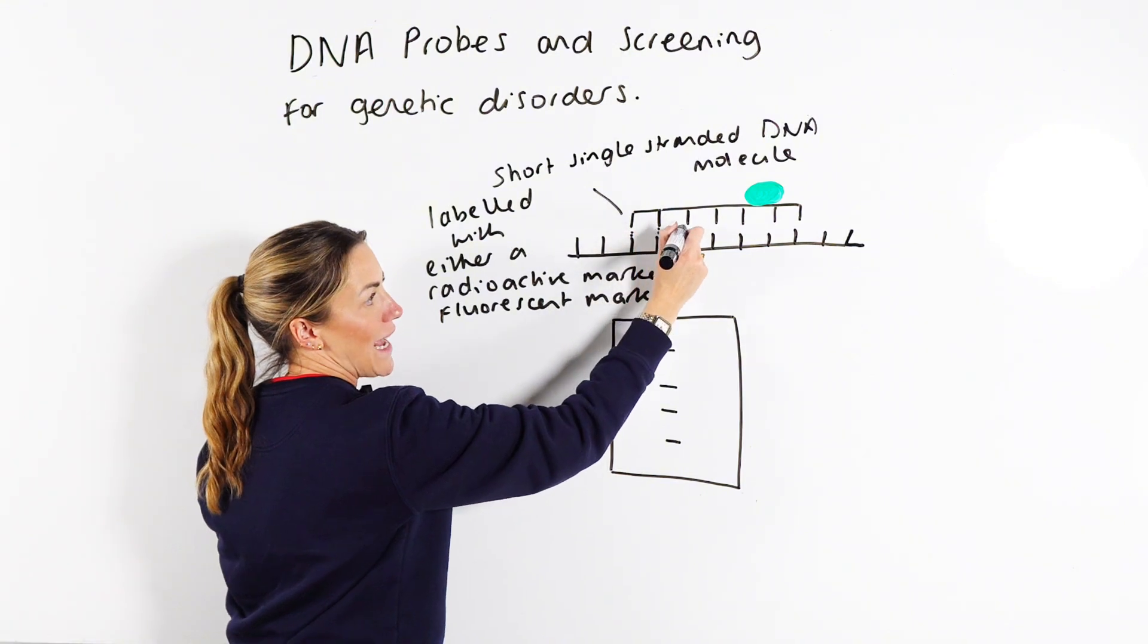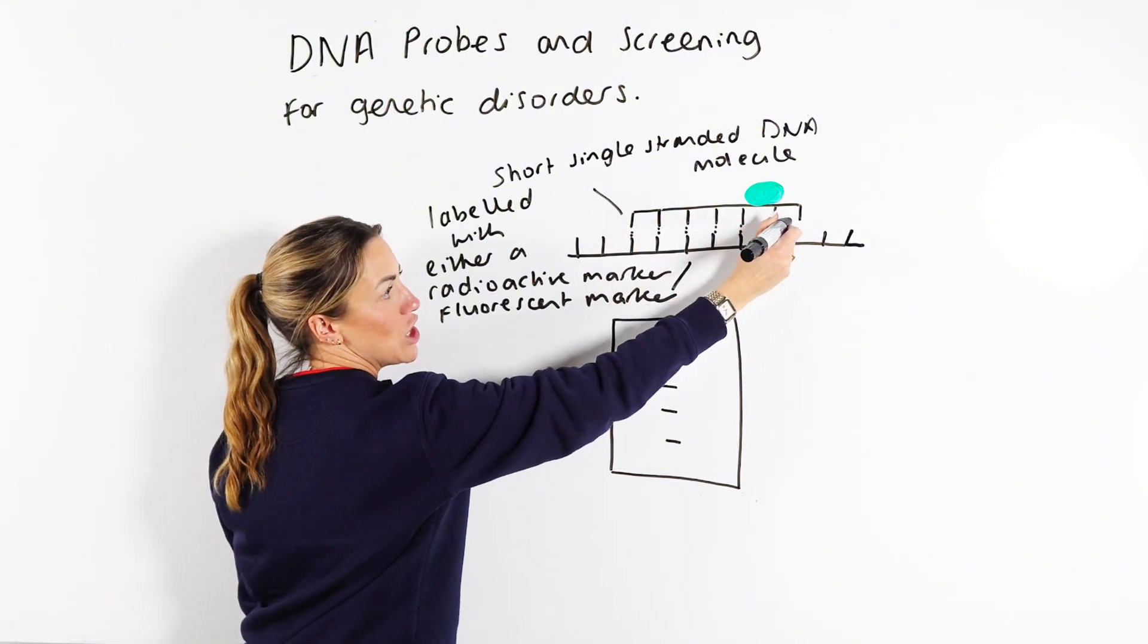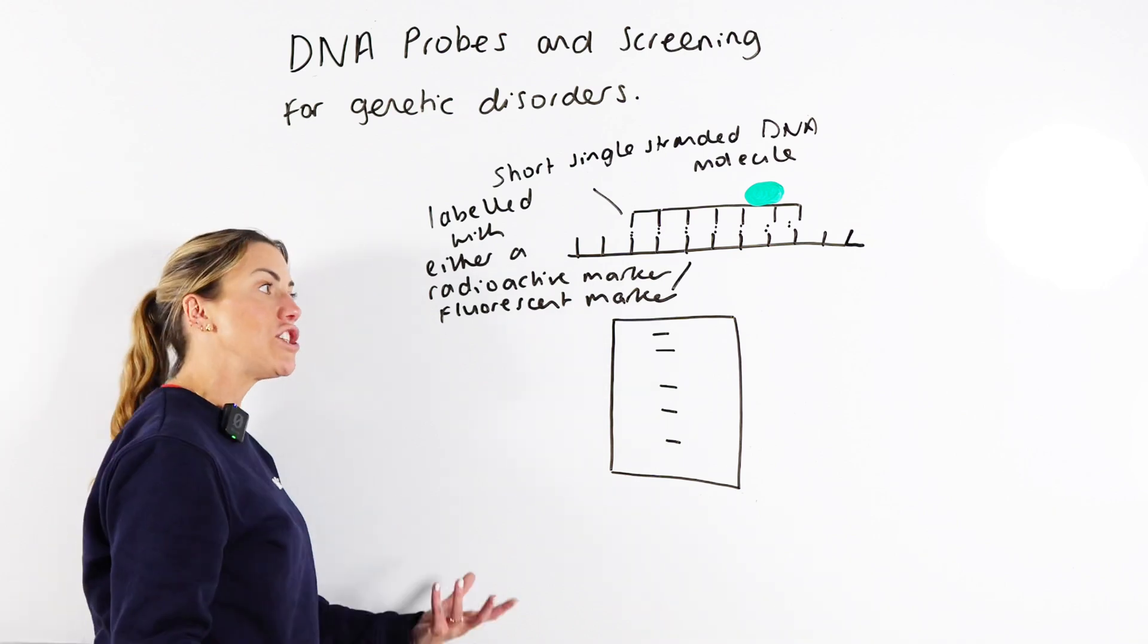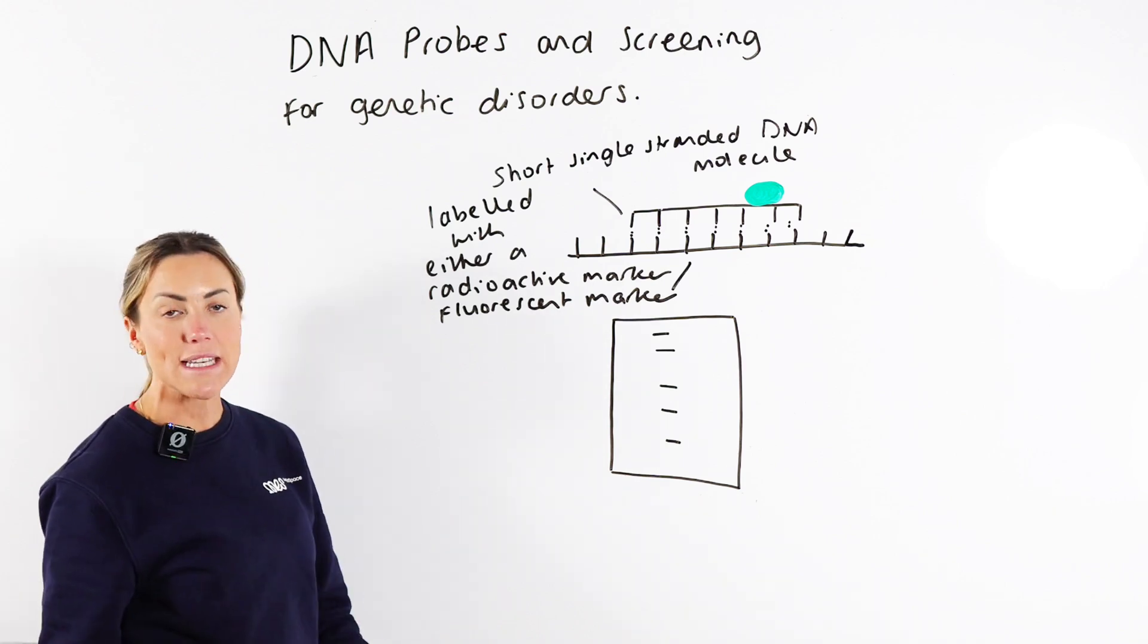In simple terms it's like hydrogen bonds are going to form, because you've got complementary bases. A bases are going to form hydrogen bonds with T bases and G bases are going to form hydrogen bonds with C bases.